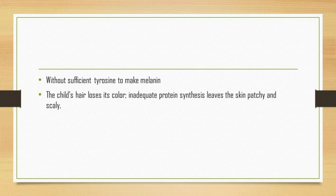Healthcare providers can often diagnose kwashiorkor by physically examining the child and observing telltale physical signs. They will ask about the child's diet and history of illness or infections. They may measure the child's weight-to-height ratio and height-to-age ratio and score them according to various charts. The weight-to-height score indicates severity, while the height-to-age score reveals how much growth has been affected. The World Health Organization has outlined 10 steps to follow when treating severe undernutrition.